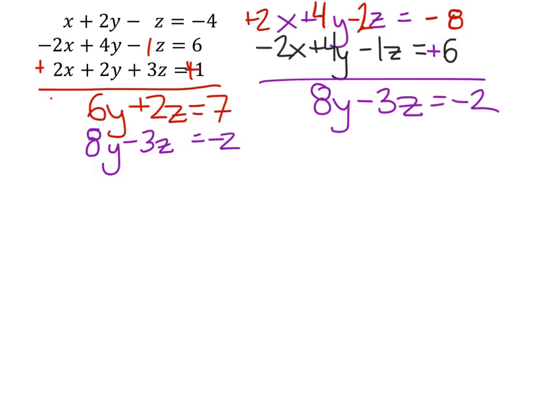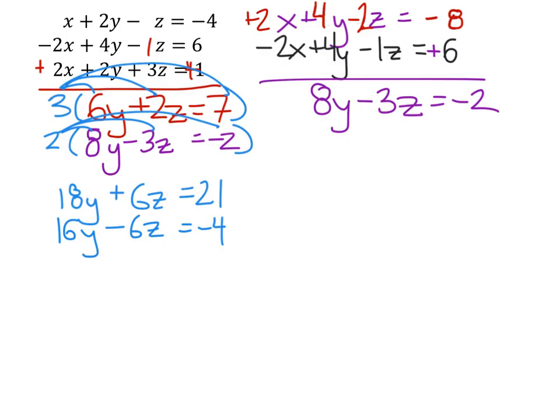Let's multiply this top equation by 3, and then we'll multiply this bottom equation by 2. So what that will do is give us an equivalent system where we're multiplying all the terms by 3 here, and in this purple equation we're multiplying all the terms by 2. 3 times 6y would be 18y plus 6z equals 21, and that gives us this bottom equation: 8 times 2y is 16y, negative 3z times 2 is negative 6z, and negative 2 times 2 is negative 4.